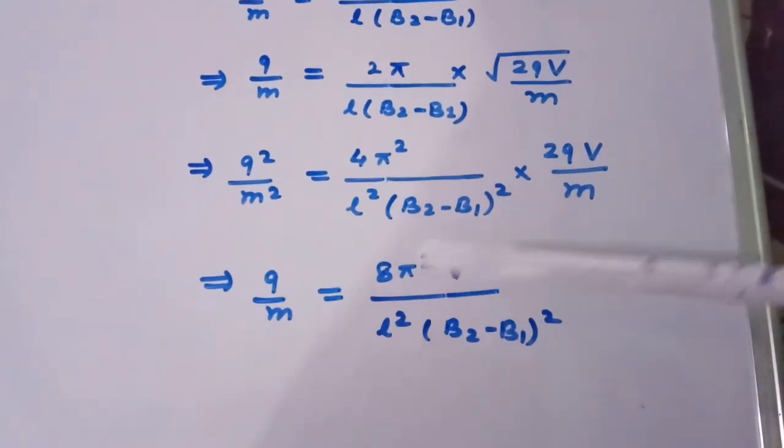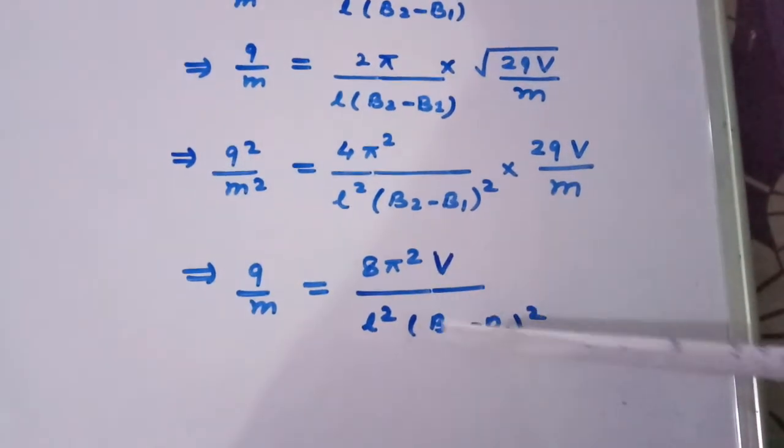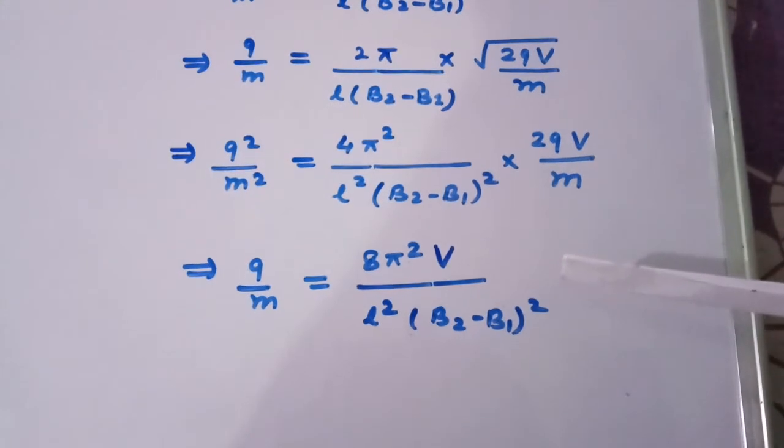Equal to 8 pi square capital V divided by L square times B2 minus B1 whole square, which is our required answer. Thank you.